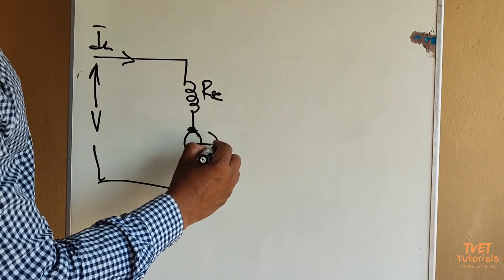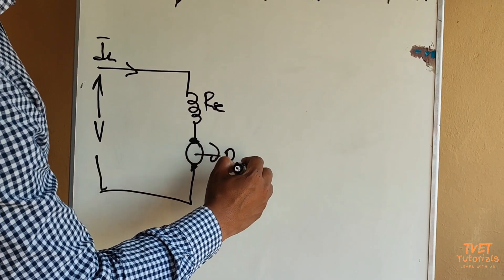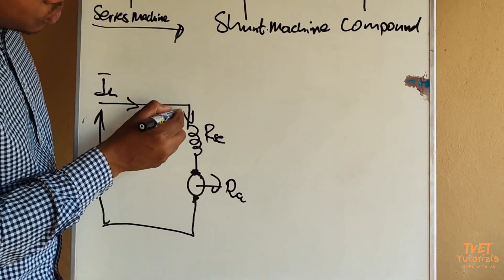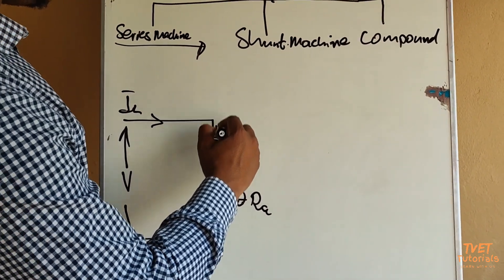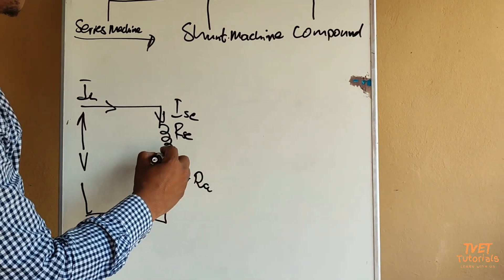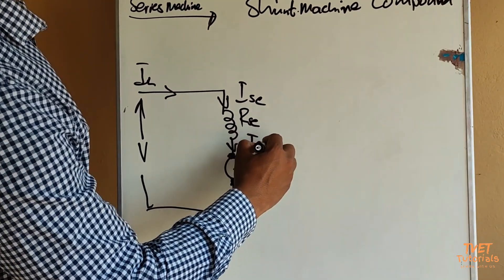This resistance is referred to as RSE meaning that is the series resistance, and on the rotating armature you will have a resistance RA. The current that flows through this resistance is referred to as ISE and the current flowing through our armature is referred to as IA.